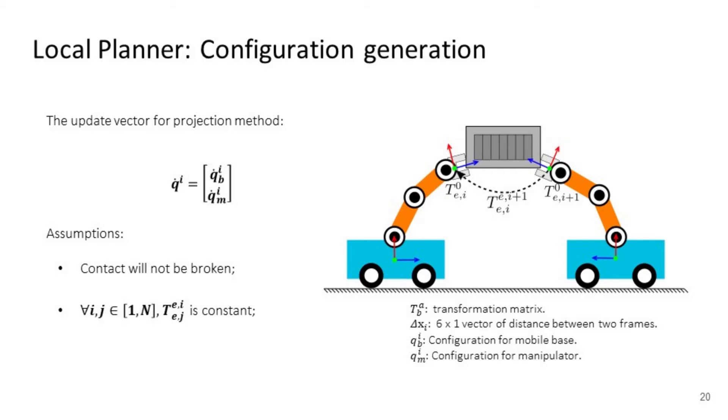As with the Jacobian pseudoinverse projection method, we need to find an update vector. Before we do that, we have two assumptions: the connection between any effector and object will not be broken, and the distance between any two effectors will be constant. In practice, we must also take into account step size, singularity avoidance, and joint limits when projecting configurations.